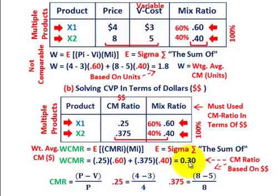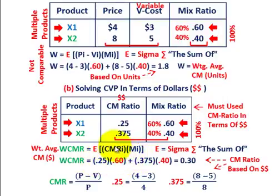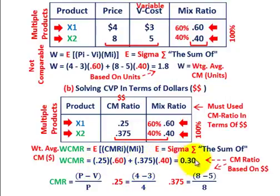The mix ratio is the same between our two products. In terms of dollars, we have to equate this contribution margin ratio as price versus variable cost divided by the price itself. So our weighted contribution margin, the sum total, gives us 0.30 — that's a contribution margin ratio based on dollars. The contribution margin ratio based on units was 1.8.